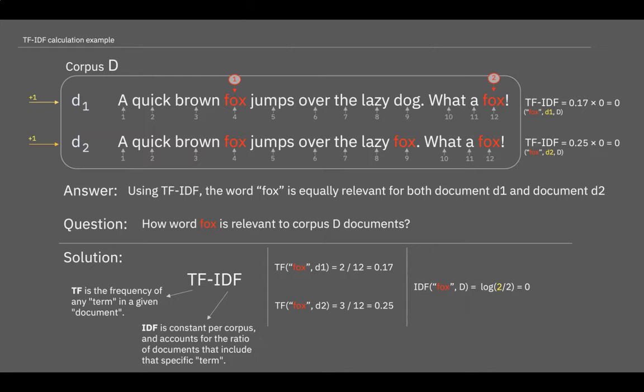By saying corpus, I mean across all the documents that we are having. So by summarizing this video, TF-IDF is a statistical measurement that evaluates how relevant a word is to a document in a collection of documents.